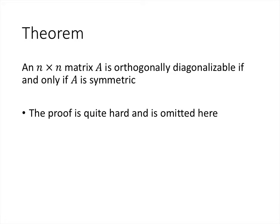In fact, this is an if and only if: a square matrix A is orthogonally diagonalizable if and only if it's symmetric. We've already proved one direction — that orthogonally diagonalizable implies symmetric. The other direction, that symmetric implies orthogonally diagonalizable, is much harder to prove. It is true, but we're going to omit that proof here.